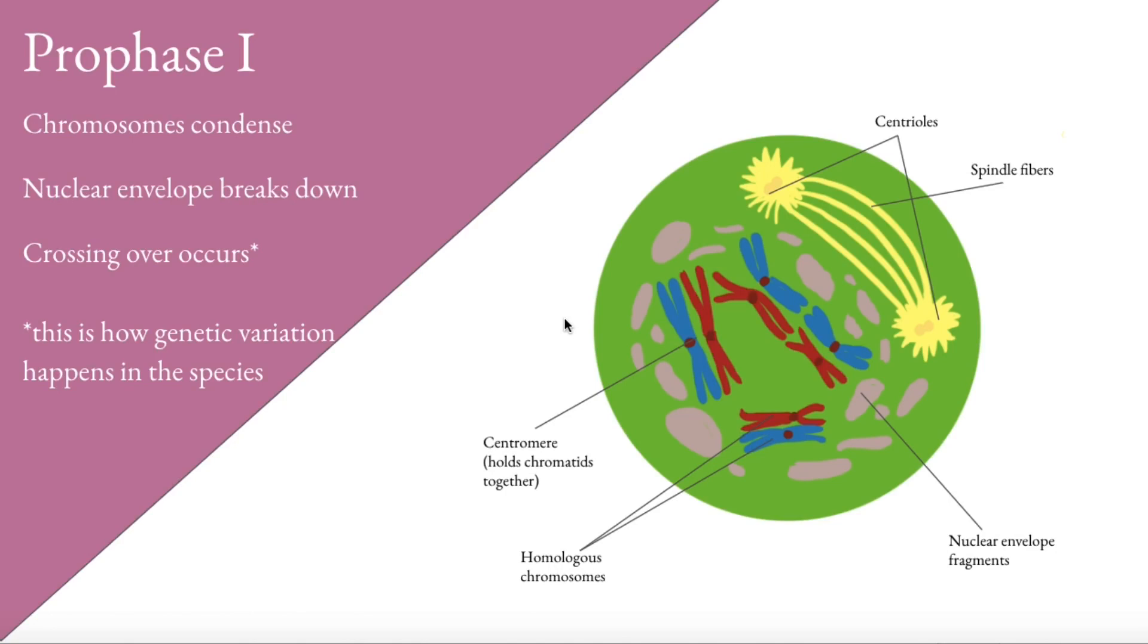Meiosis includes two divisions to end up with four cells at the end. Prophase, metaphase, anaphase, telophase are the four phases that each division goes through, so you'll see them labeled as prophase 1 and prophase 2, and so on. Chromosomes in prophase 1 do condense. The nuclear envelope breaks down, but a cool thing occurs right here called crossing over. This is how genetic variation happens within the species.